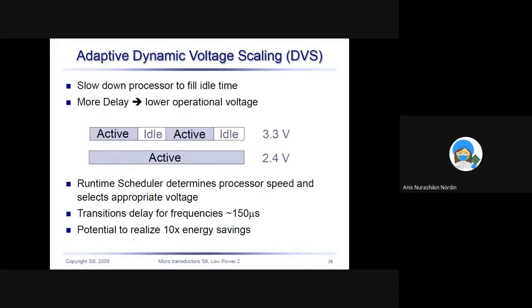Next, adaptive dynamic voltage scaling. This is together with the voltage—you change the voltage. For example, you can slow down the processor to fill idle time. If you can see in your CPU or the computer, not all the time is the computer active. Sometimes you are opening many windows, so you have window one, window two. For example, right now I'm using PowerPoint and I'm opening a whole bunch of other stuff, but the others are idle. So at the idle time, you can slow down the processor to fill in the idle time.